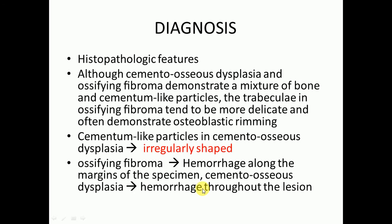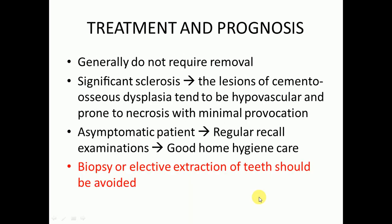Histopathological features are also helpful in diagnosis. Although cemento-osseous dysplasia and ossifying fibroma both demonstrate a mixture of bone and cementum-like particles, the trabeculae in ossifying fibroma tend to be more delicate, open, demonstrate an osteoblastic rim, and are more organized. In cemento-osseous dysplasia they are disorganized, and cementum-like particles are irregularly shaped. Hemorrhage along the margins is present in ossifying fibroma, whereas in cemento-osseous dysplasia hemorrhage may be present throughout the lesion.